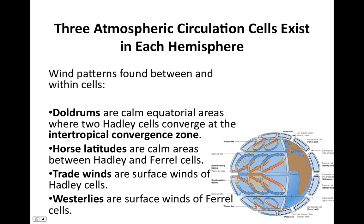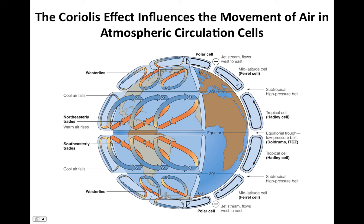Finally, the westerlies are the surface winds of the Ferrel cells. In the Ferrel cells, air moves along the surface from low to high latitude — northward in the northern Ferrel cell and southward in the southern. This air is deflected to the right in the northern hemisphere, resulting in wind blowing from west to east. Our prevailing surface winds in Rhode Island are westerlies — that's why during a weather forecast the meteorologist references what's happening over the continent, because those westerly winds will bring that weather to us.